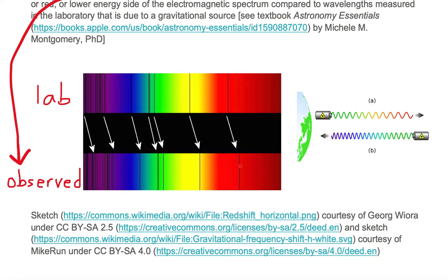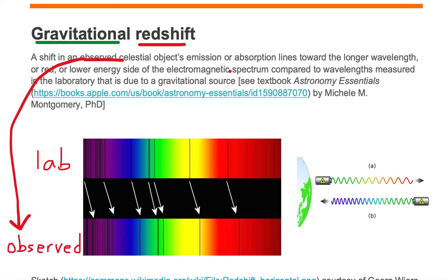Notice that the observed spectrum absorption lines are all shifted to the right or on the red side of the electromagnetic spectrum. Because all the lines are shifted to the right compared to the laboratory spectrum, it's called a redshift.